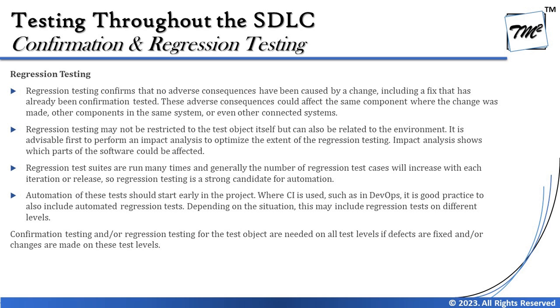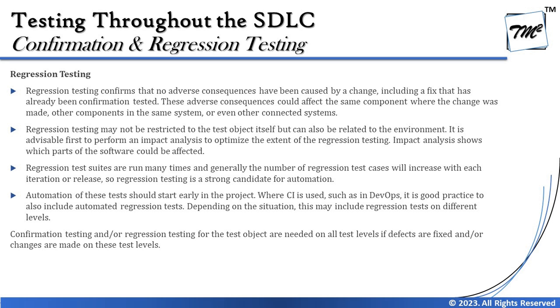The syllabus defines regression testing as confirming that no adverse consequences have been caused by a change, including a fix that has already been confirmation tested. These adverse consequences could affect the same component where the change was made, other components in the same system, or even other connected systems. Regression testing may not be restricted to the test object itself but can also be related to the environment. Impact analysis is advisable to optimize the extent of regression testing.